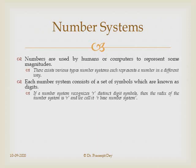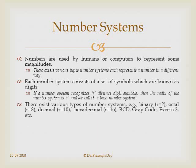What is a number system? Numbers are used by humans and computers to represent magnitudes. There exist various number systems which represent a specific number in different ways. Each number system consists of a set of symbols known as digits. If a number system recognizes R distinct digit symbols, then the radix of the number system is R and we call it an R-based number system. There exist various types: binary, octal, hexadecimal, etc.